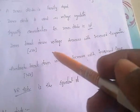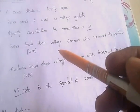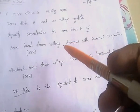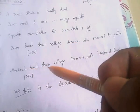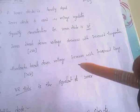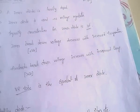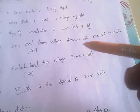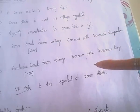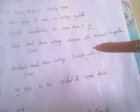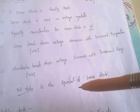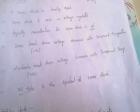In Zener breakdown, as temperature increases, voltage decreases. In avalanche breakdown, as temperature increases, voltage also increases. The Zener diode is equivalent to a VR tube — very important.